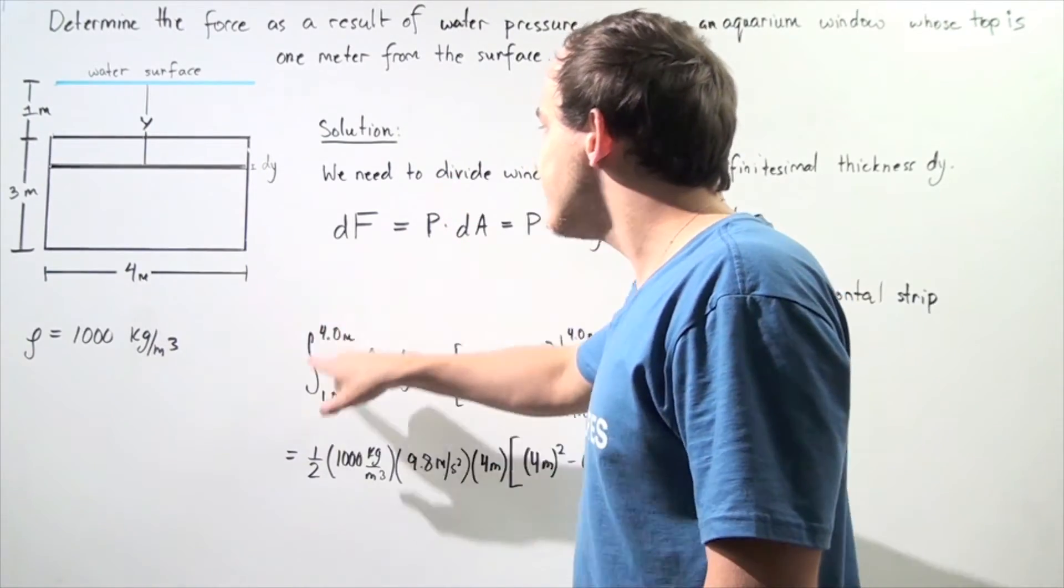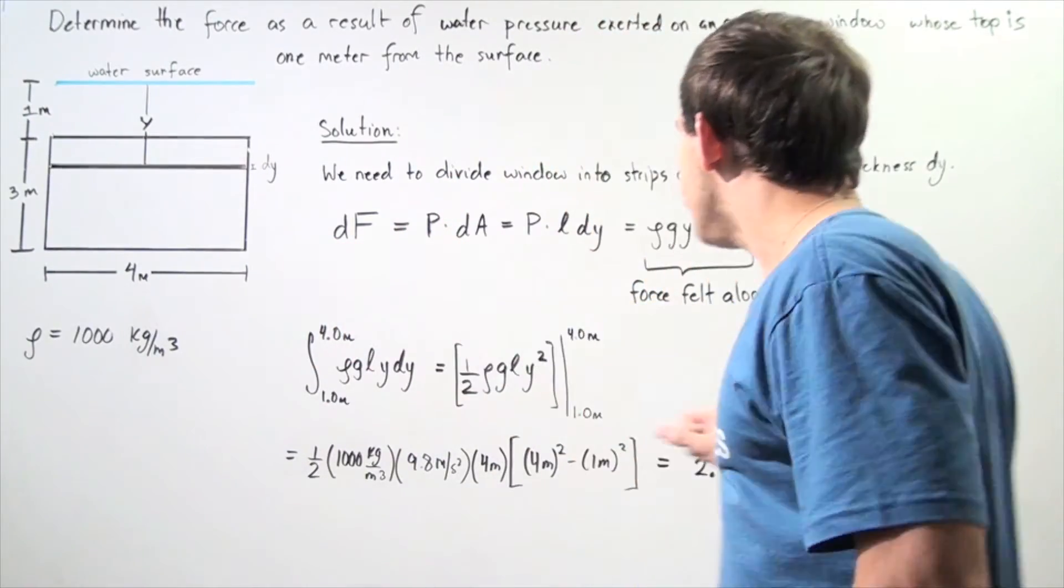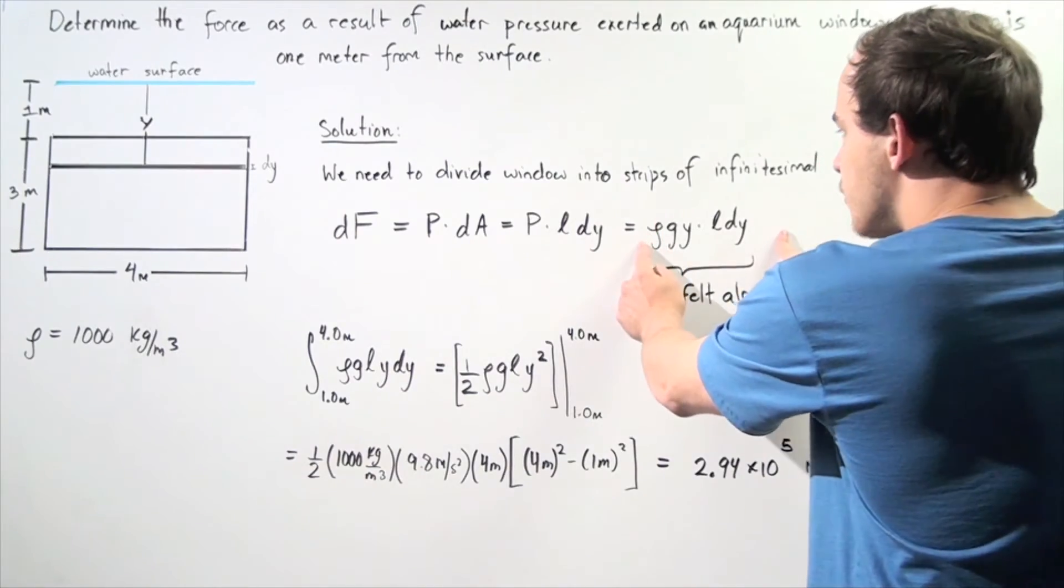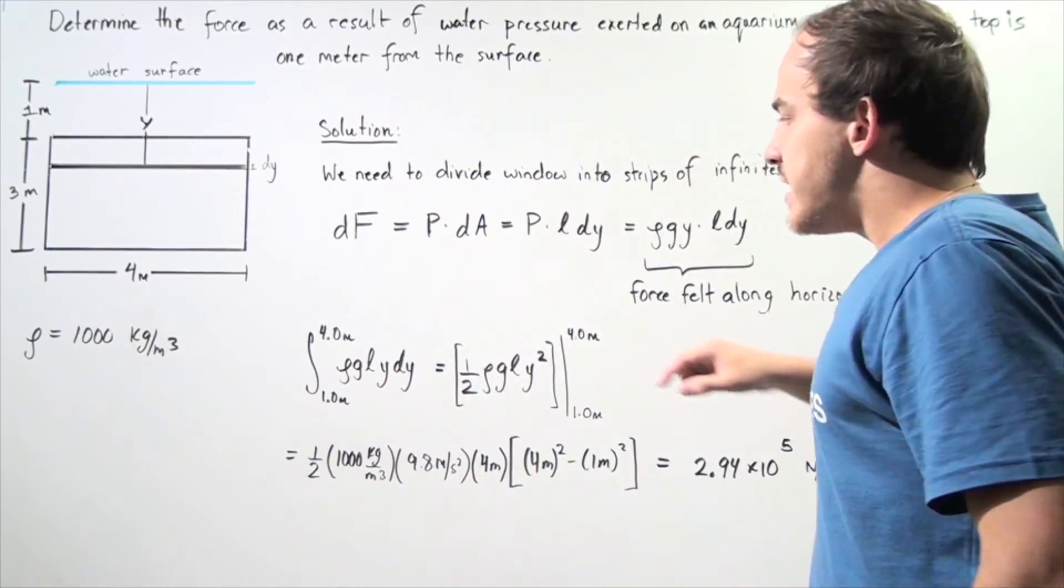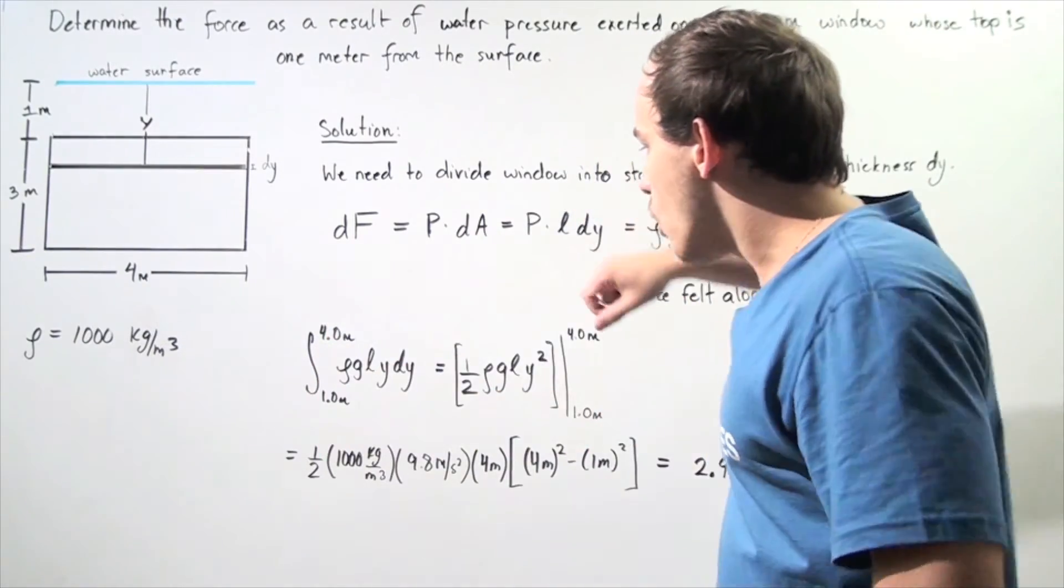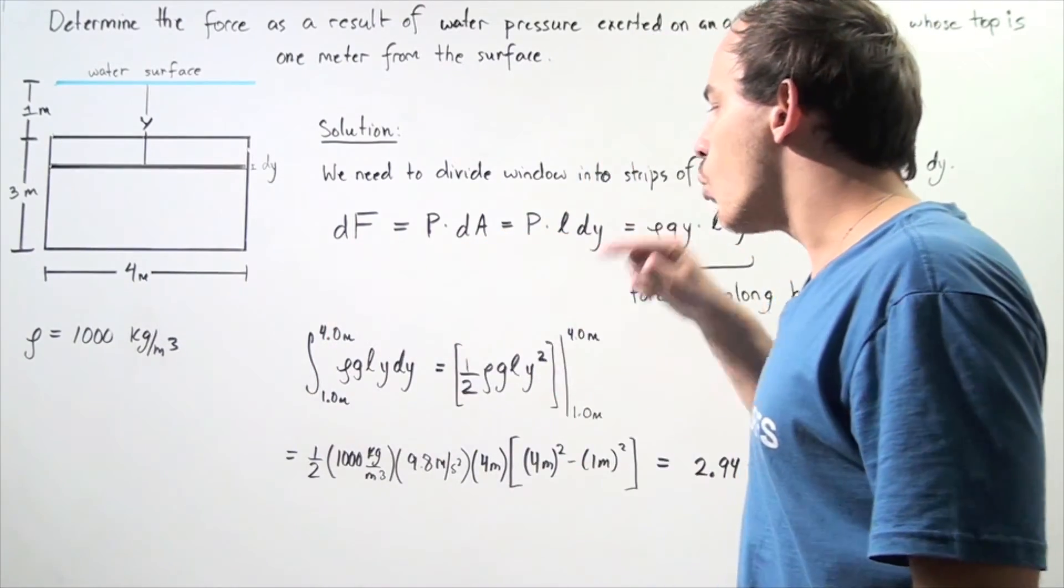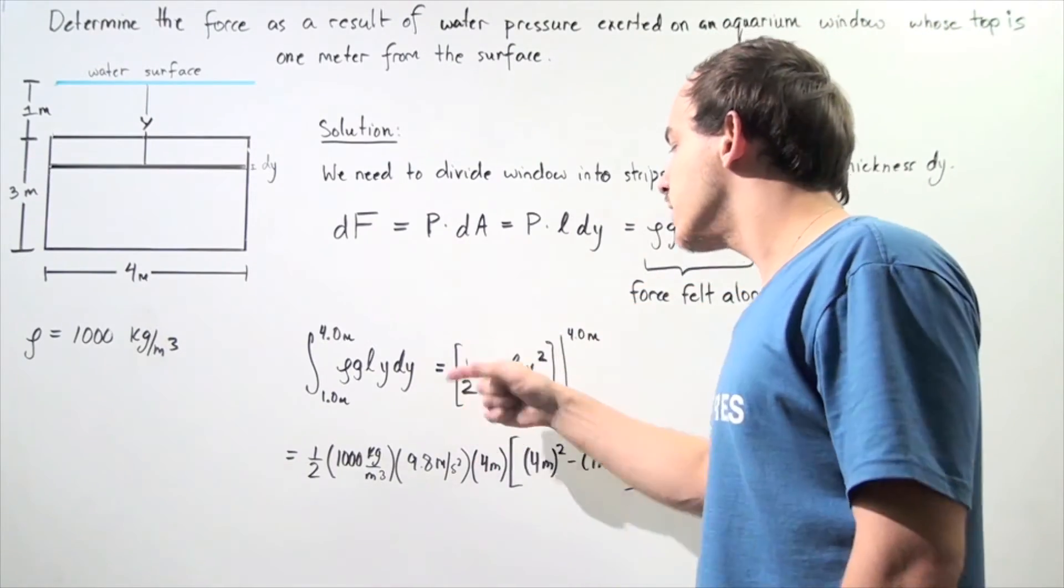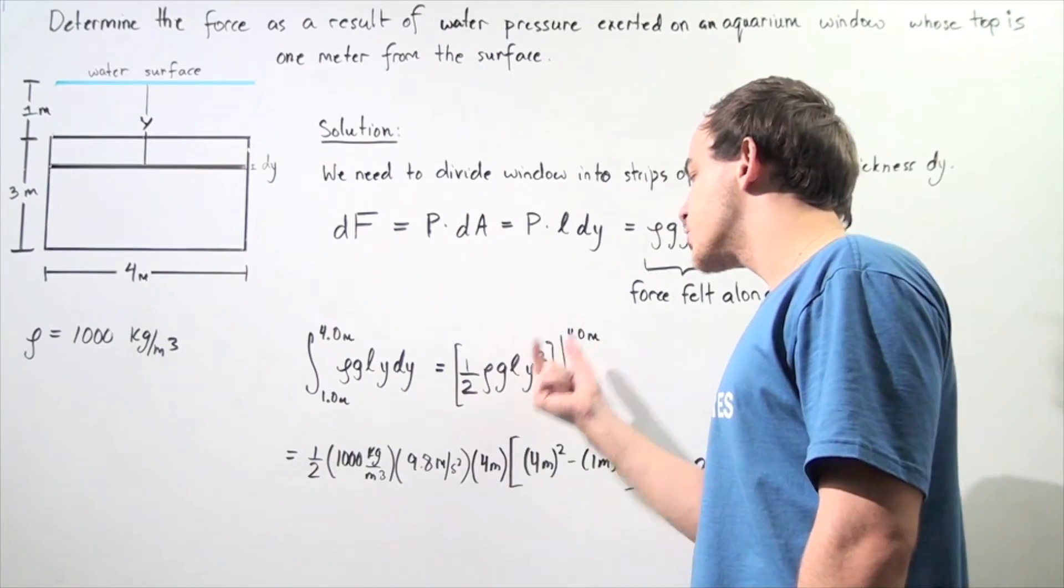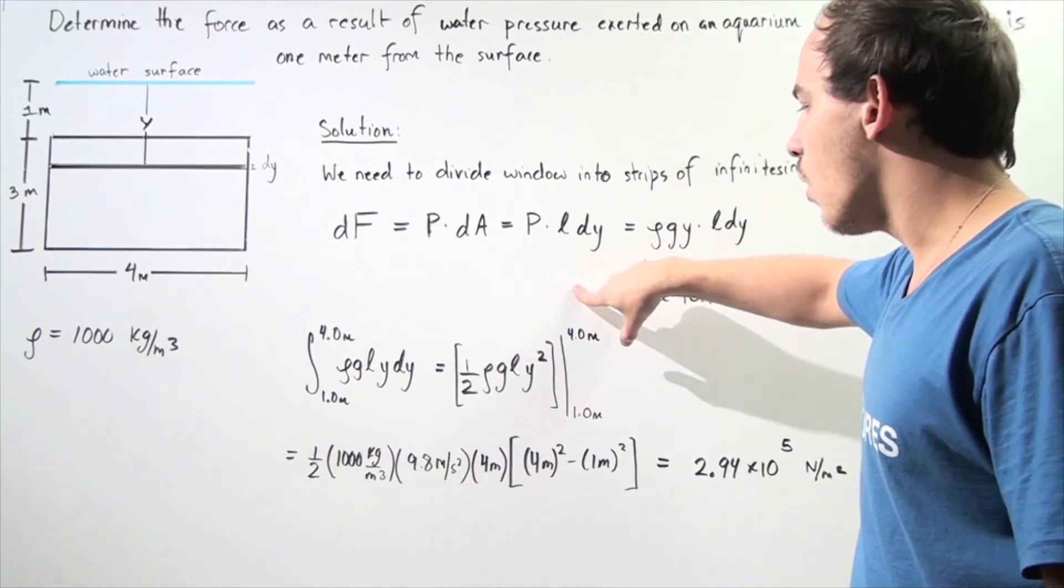So we simply take the integral of df, which is the same thing as this entire value. So we take this formula and place it here. So now we take the integral and notice that our y becomes y squared divided by 2. So we get one half our density times g times L times y squared from 1 to 4.